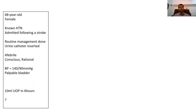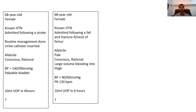The second case: same age and gender, a patient with hypertension admitted following a fall and fracture of the right neck of femur. There is a large-volume bleeding into the thigh. Blood pressure is low at 80/60 mmHg and the patient is tachycardic at 130 beats per minute. On monitoring, the patient has only passed 10 millilitres of urine over the last six hours.